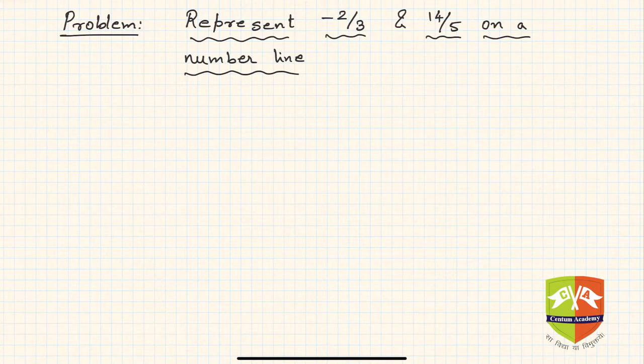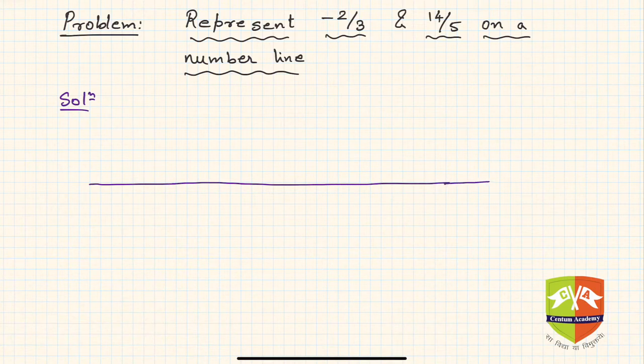We have discussed this in detail in the concept lectures. Now time to solve the problems. First of all, draw a straight line in your answer script using a ruler and pencil. Then take a point as 0.